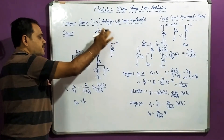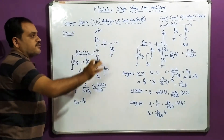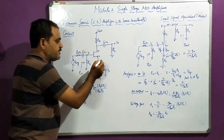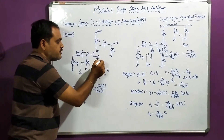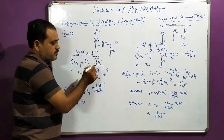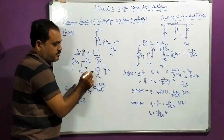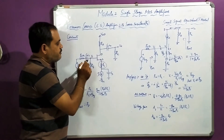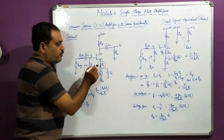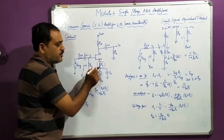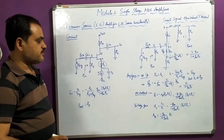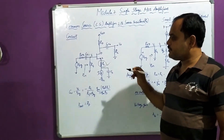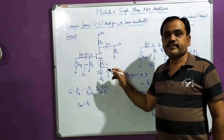This circuit is almost the same as the common source amplifier we have discussed. The change here is that we have connected a source resistance in series with the source terminal along with this particular constant current source. The working of all the capacitors is the same. Now in the small signal analysis, because of the presence of this resistance, it is going to act as a degeneration resistance.